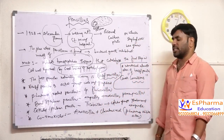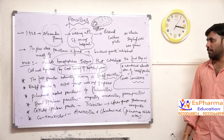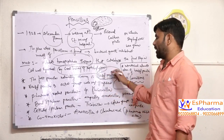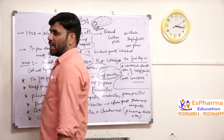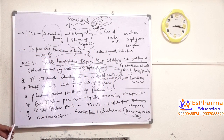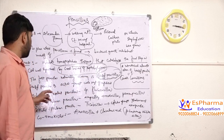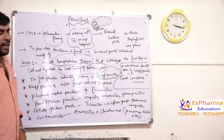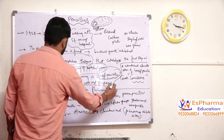What is a naturally occurring penicillin? The first naturally occurring penicillin is called benzyl penicillin. This benzyl penicillin is active against a wide range of infections.